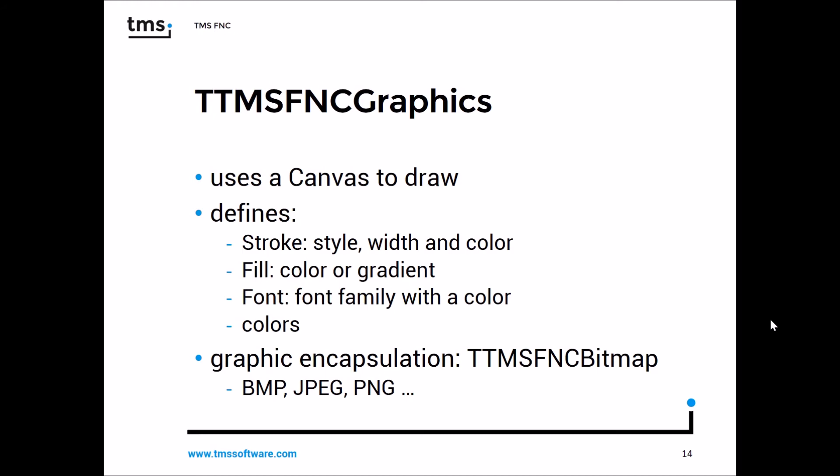TTMS FNC Graphics offers a canvas to draw things — the same canvas across all frameworks. This canvas defines a stroke with style, width, and color; a fill which can be a color or gradient; and a font defining family, color, size, and everything else you're used to from VCL. The canvas also has unique color definitions shared across all frameworks. To load graphics like BMP and JPEG, there's a class called TTMS FNC Bitmap, which gives VCL the same loading comfort as FireMonkey and Lazarus.